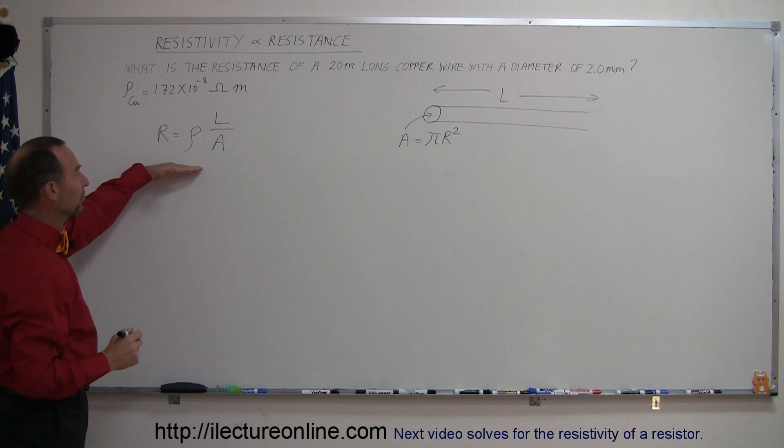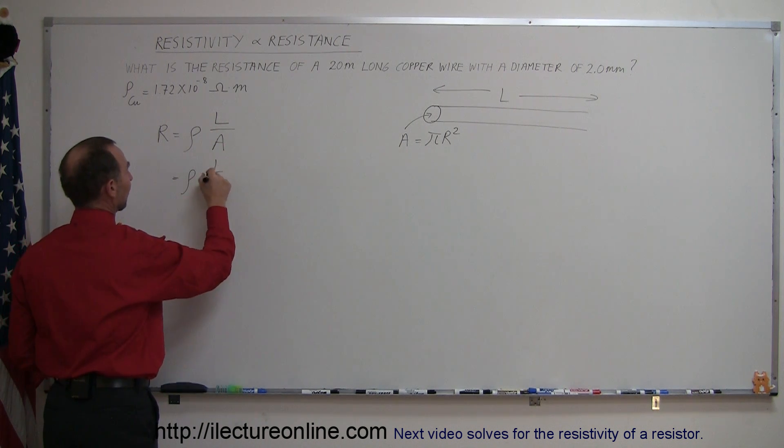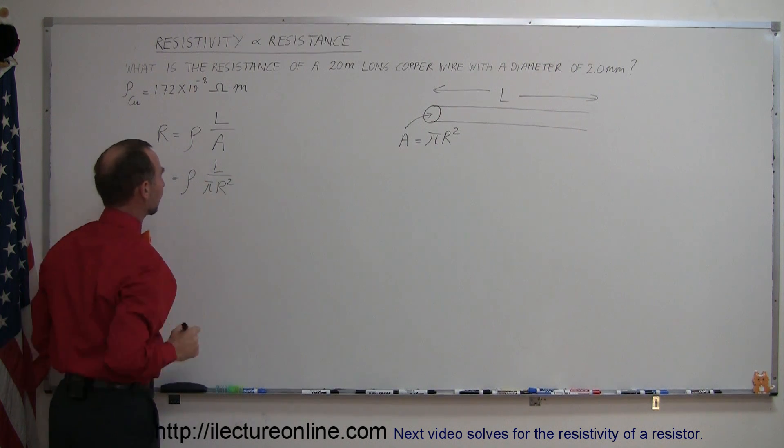So then our equation now becomes the resistivity times the length divided by π times the radius squared.